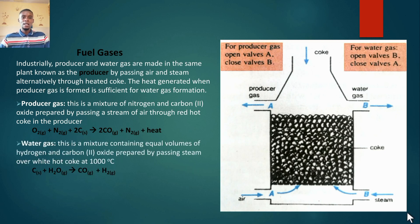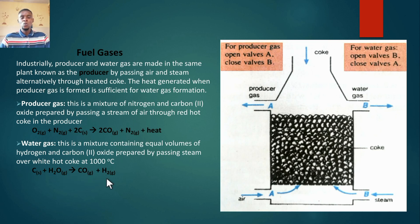Now for water gas — in this case you pass in steam. Water, represented with (g) meaning steam, is passed through solid coke at 1000 degrees Celsius, and we get carbon monoxide and hydrogen in a 1:1 ratio. A mixture of carbon monoxide and hydrogen in a 1:1 ratio is referred to as water gas.